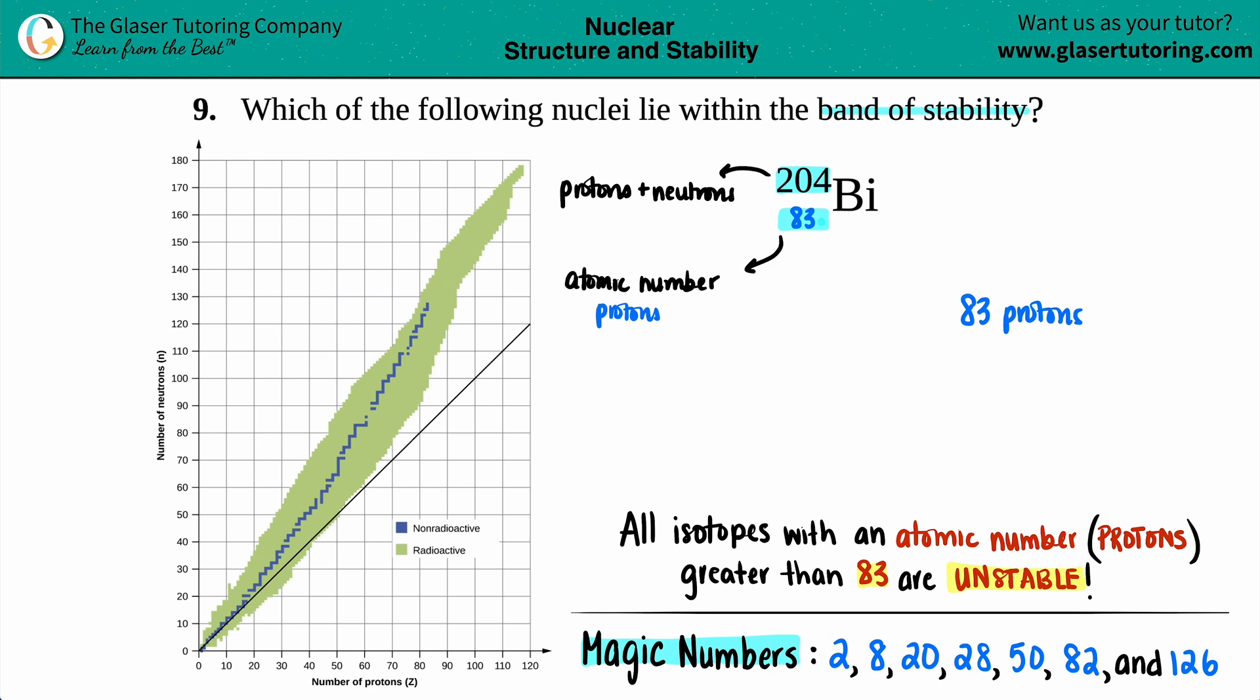Now let's try to find out those neutrons. If the top number 204 is protons plus neutrons and the bottom number is just the protons, I can subtract them to find out the number of neutrons. So we have 204 minus 83, that's 121 neutrons.